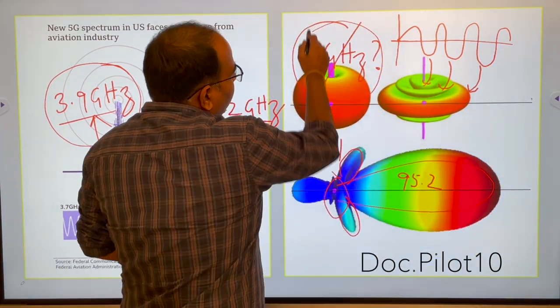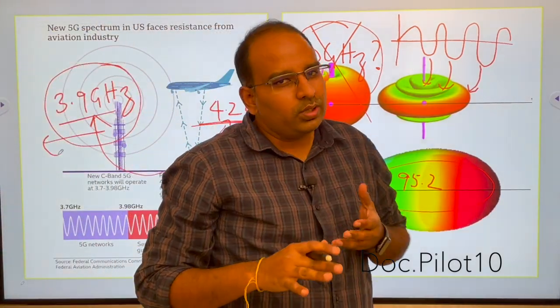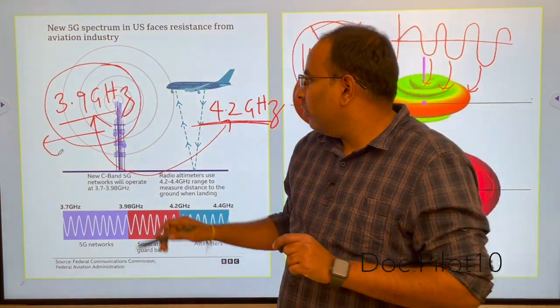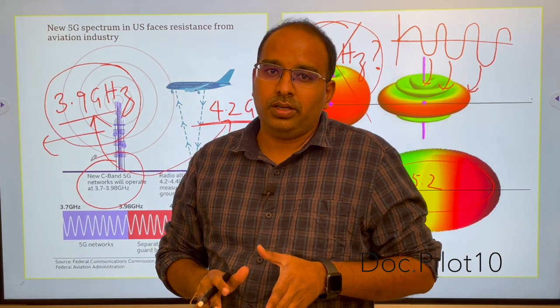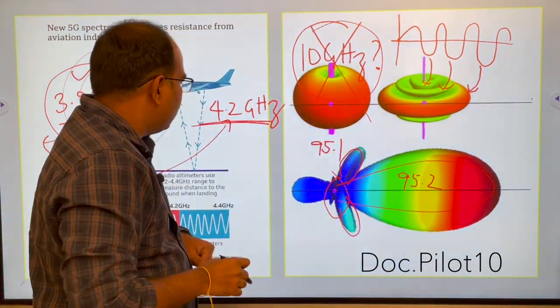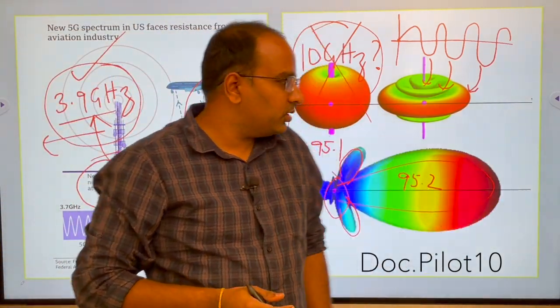So 10 gigahertz is not an option. Going down below 3.9 or 2 is not an option because the data transfer speeds are very less. So these networks have paid around 85 million in US dollars to buy this frequency.